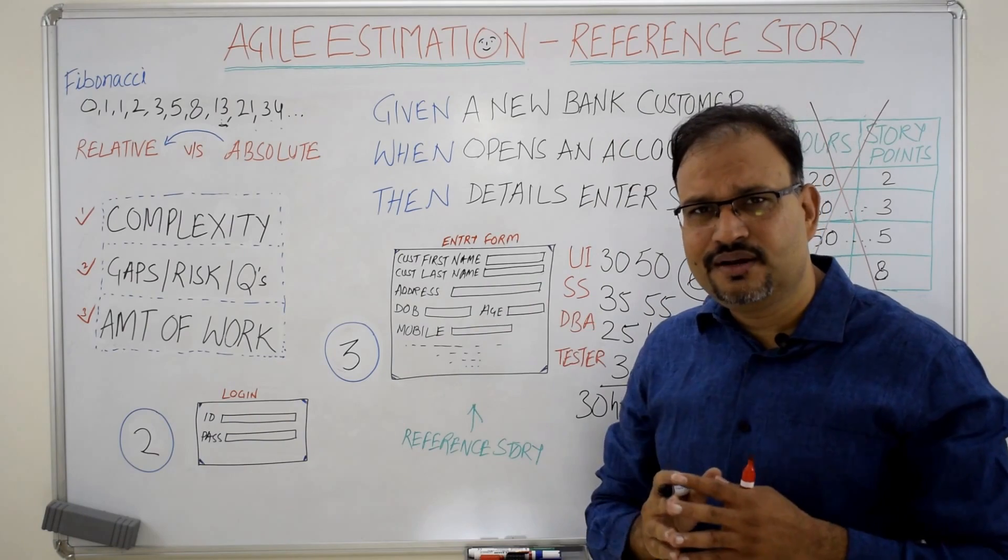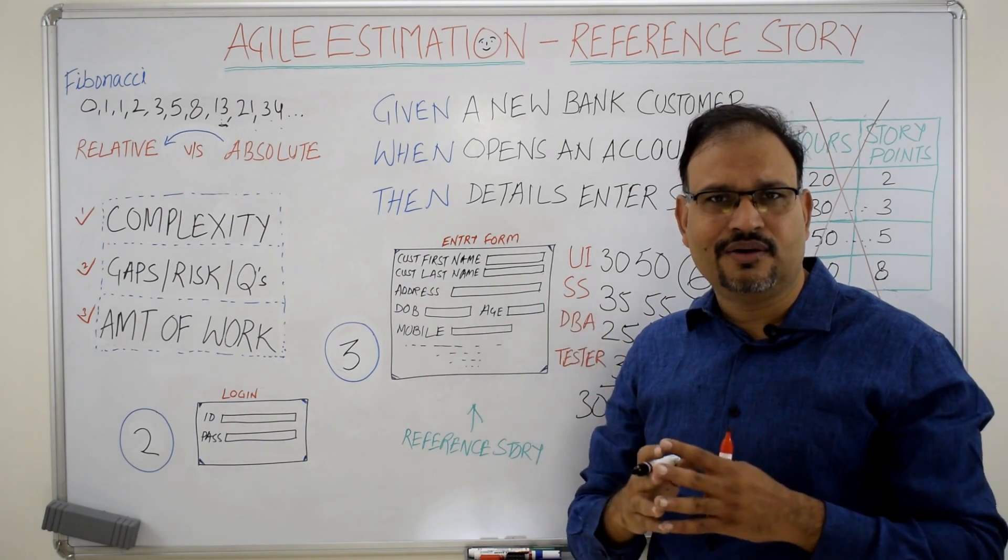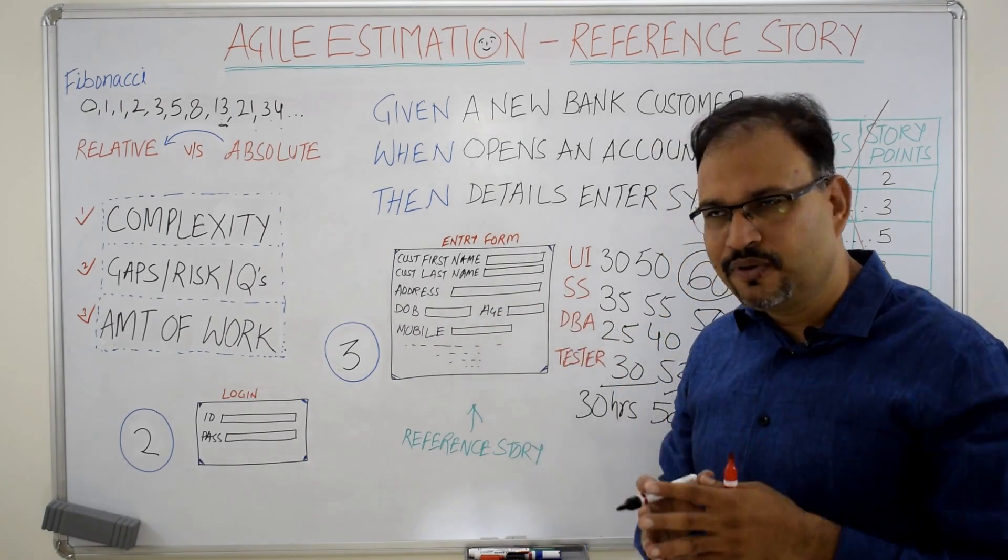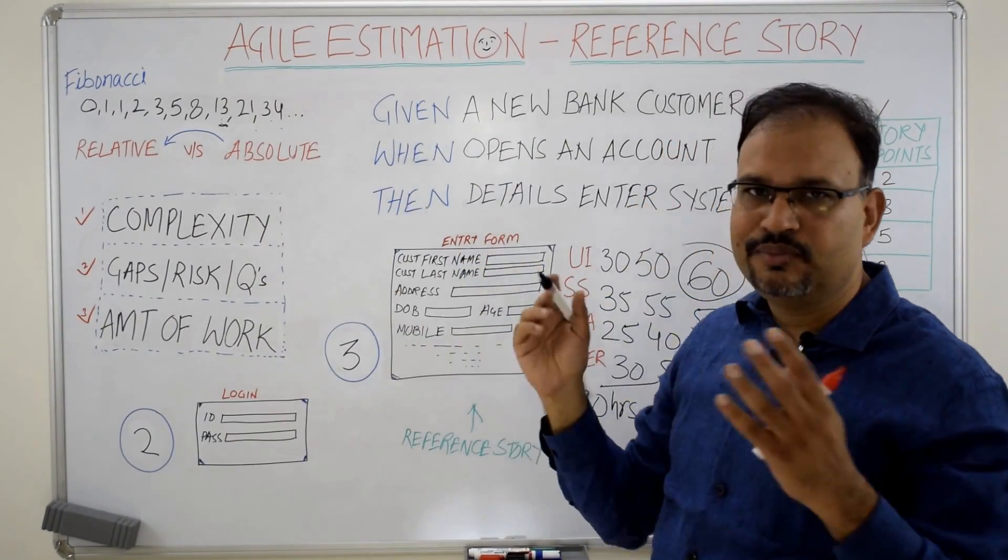And there may be stories which are more complex and much bigger than all these stories we talked about. In that case, these stories will be assigned a story point of 21, 34 and even more.